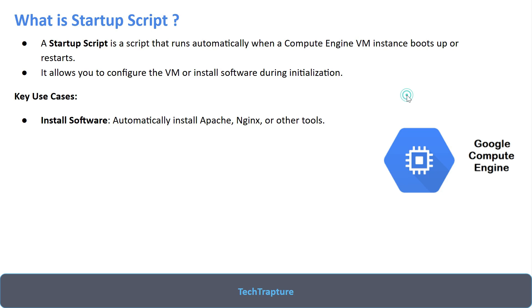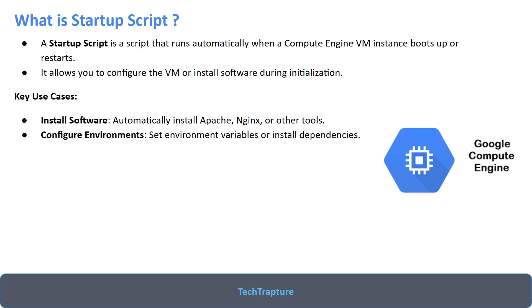Use cases for startup scripts include installing software automatically — like Apache, Nginx, or any tools required for your organization — and configuring the environment. For example, if all your VM instances should be using Python or Terraform, and you have 20 or 100 virtual machines, logging into each VM to install software is not a good practice. Instead, you can use a startup script to deploy and install all your dependencies automatically.